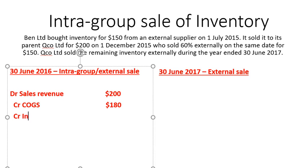The next thing we want to do is credit inventory by $20. The original cost the group wants to use is $150. We've already sold off $90 worth of that, so we have $60 inventory remaining. Qco's cost was $200; from their perspective, we sold off $120 externally, leaving $80 remaining. From a group perspective, we want to carry inventory at its original cost, so we need to reduce inventory from the $80 on Qco's balance sheet back to $60. That's why we're crediting inventory by $20.